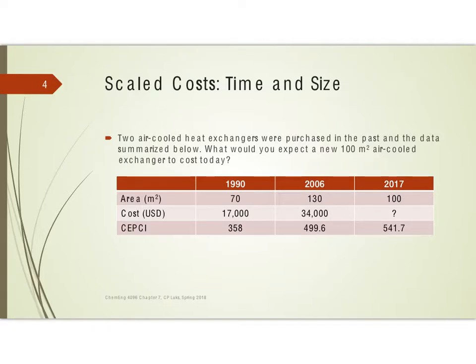Now the first thing that I recommend doing is always immediately begin by converting everything to today's costs. So what I'm going to do is I'm going to take this number and multiply by 541.7 and divide by 358, so the cost of this item in today's dollars is $25,723.18.